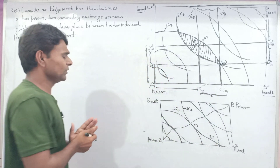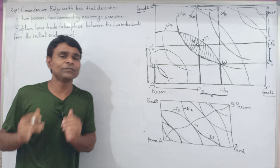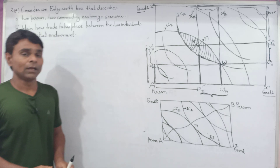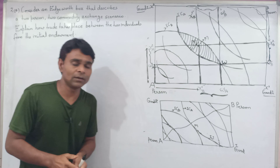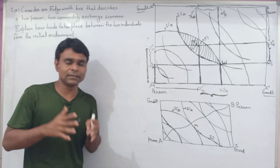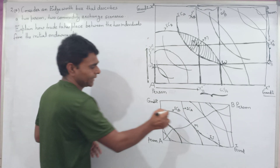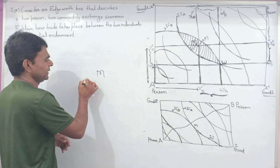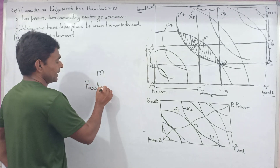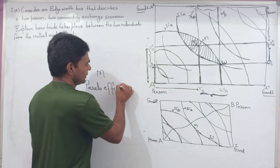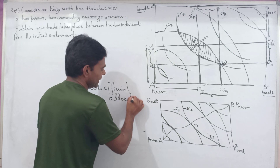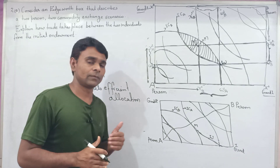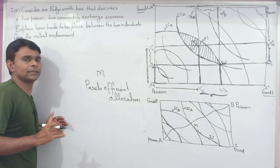Now, which point represents the Pareto efficient allocation? The Pareto efficient allocation is that point where the highest possible indifference curves for both person A and person B intersect each other. According to this graph, point M is the Pareto efficient allocation, where the highest possible indifference curves for persons A and B intersect each other at point M.